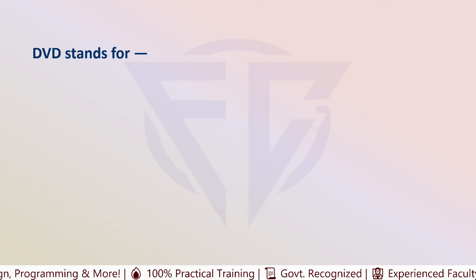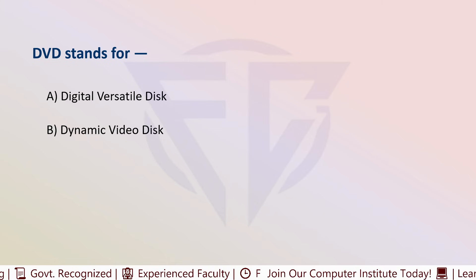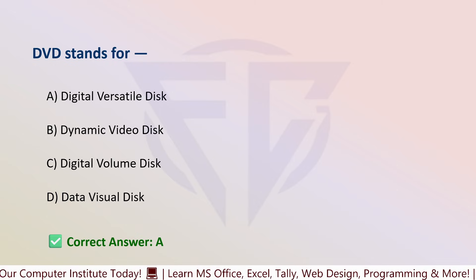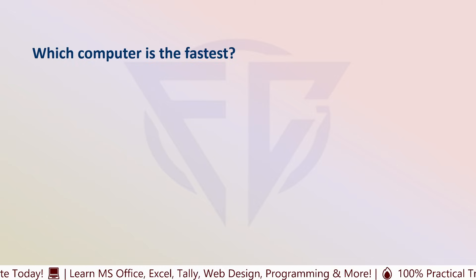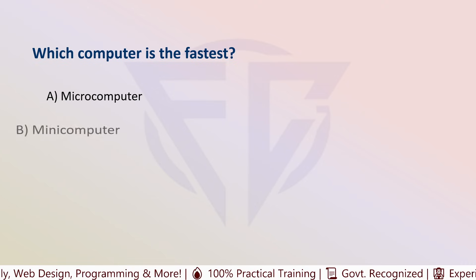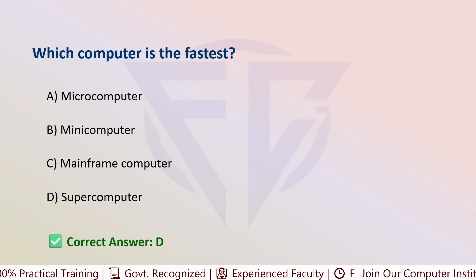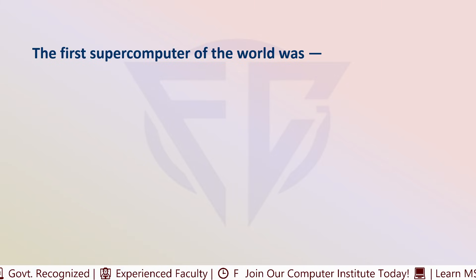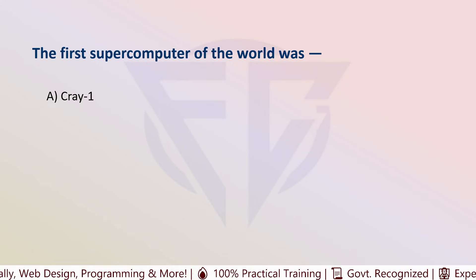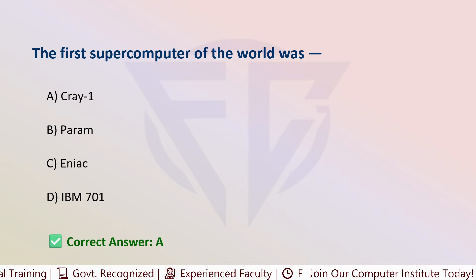The next question is: DVD stands for — options are: A) Digital Versatile Disc, B) Dynamic Video Disc, C) Digital Volume Disc, and D) Data Visual Disc. The correct answer is A, Digital Versatile Disc. The next question: which computer is the fastest? Options are: A) Micro computer, B) Mini computer, C) Mainframe computer, and D) Supercomputer. The correct answer is D, that is supercomputer. The next question: the first supercomputer of the world was — options are: A) Cray-1, B) PARAM, C) ENIAC, and D) IBM 701. The correct answer is A, that is Cray-1.